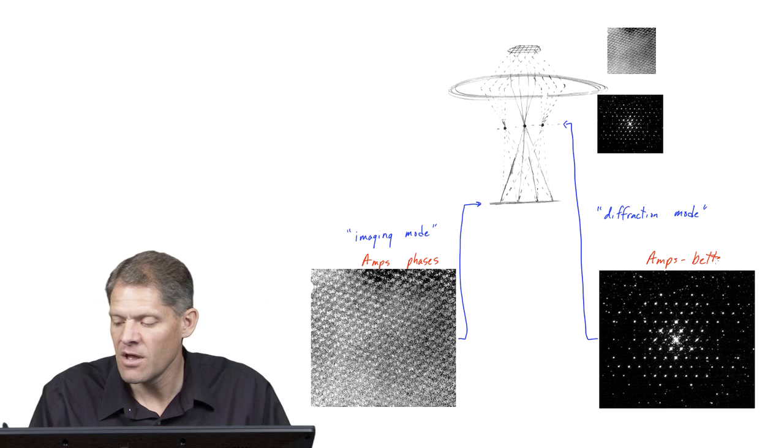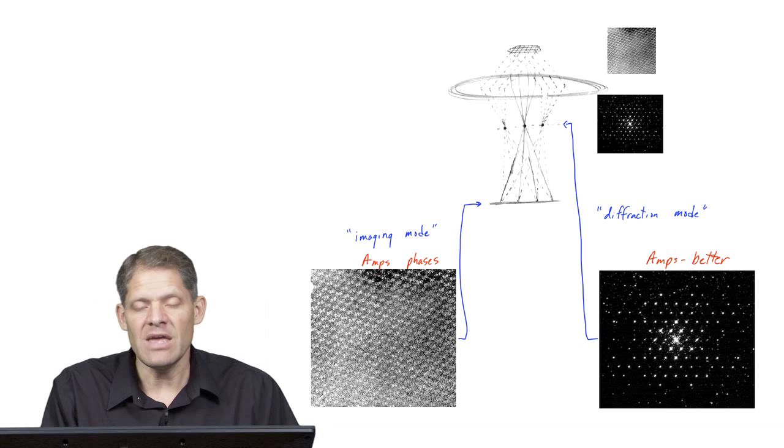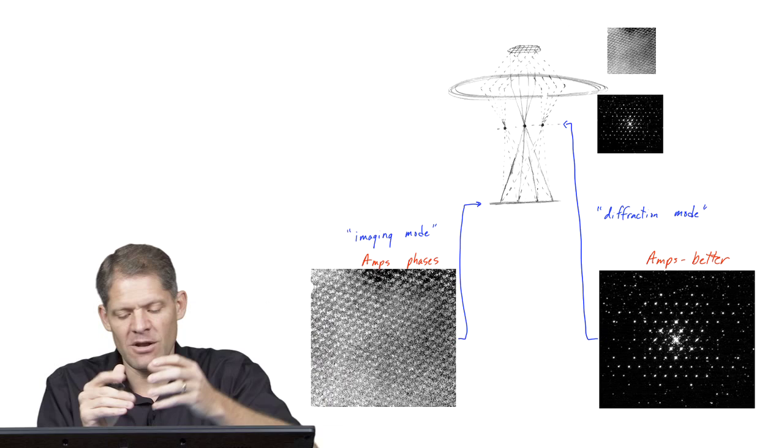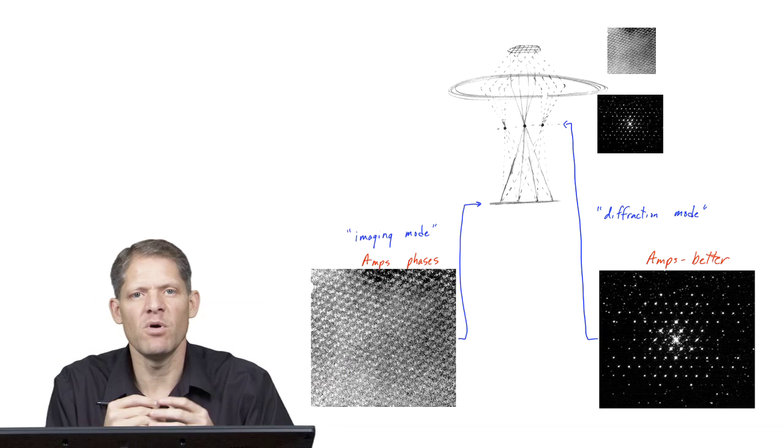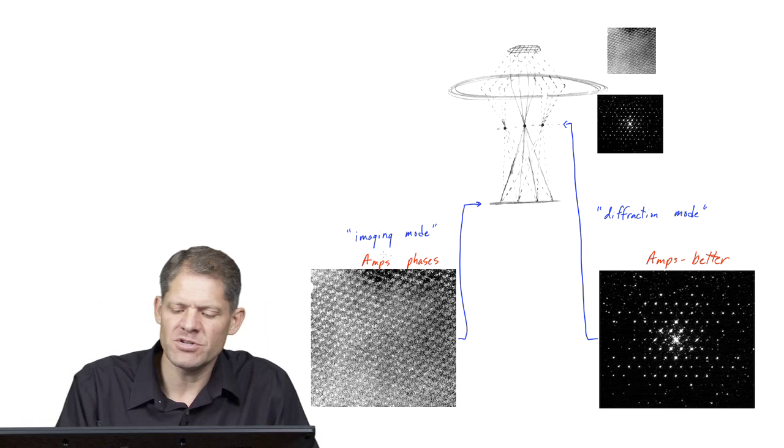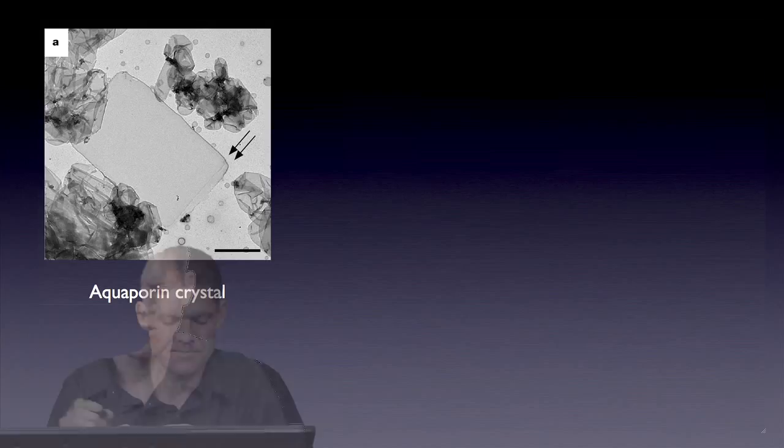Here in the imaging mode, if you're imaging a crystal that's drifting slightly during the image, then it blurs out the crystal just like beam induced motion we've discussed. So imaging mode gives you both amplitudes and phases, but the best way to measure accurate amplitudes is through diffraction mode.